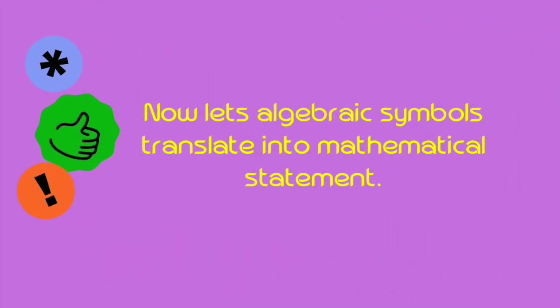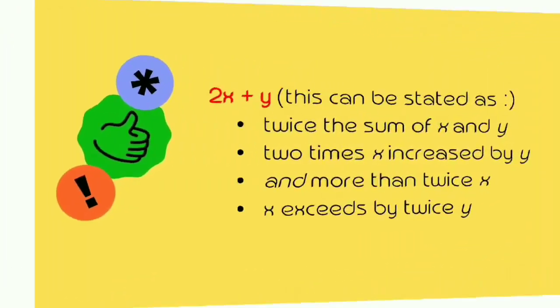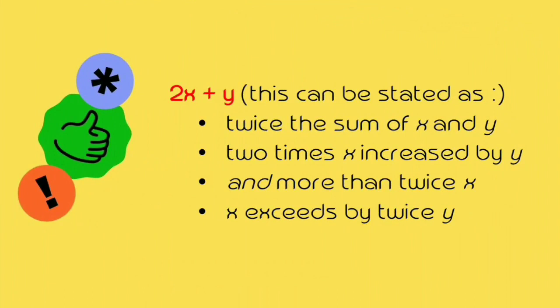Now, let algebraic symbols translate into mathematical statements. 2x plus y can be stated as either twice the sum of x and y, or 2 times x increased by y. It can also be stated as y more than twice x, or x exceeded by twice y.